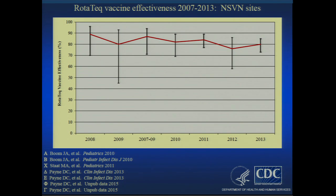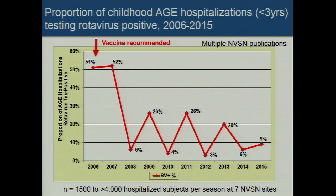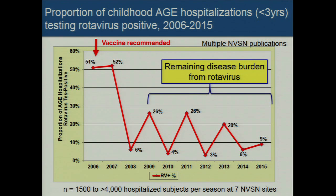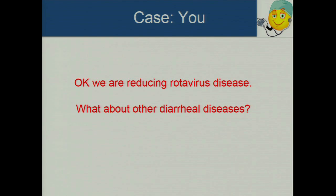Vaccination uptake was relatively rapid initially, though coverage has peaked around 70–75%, not as high as many of us wanted. However, this is actually a more effective vaccine than influenza vaccine. We've been doing annual studies of rotavirus vaccine effectiveness and it's about 80% effective year after year, which is great. The proportion of childhood acute gastrointestinal hospitalizations testing rotavirus-positive has plummeted over the years since the rotavirus vaccine was recommended. There's an every-other-year bump that I can't explain, but the overall decline is clear. The bad news is that remaining disease burden means we need to raise rates even higher.